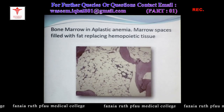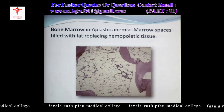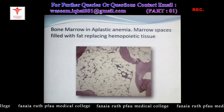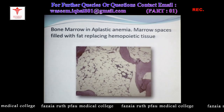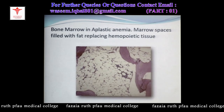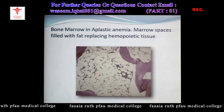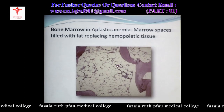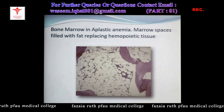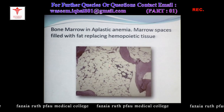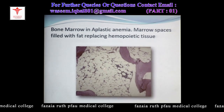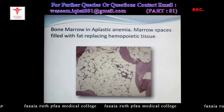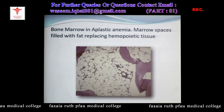This is the bone marrow biopsy of a patient with aplastic anemia. Normally the spaces are filled with blood cells, but here the blood cells in the bone marrow are very sparse and replaced by fat tissue — this is what you see in aplastic anemia because cells are not being produced by the pluripotent stem cell.